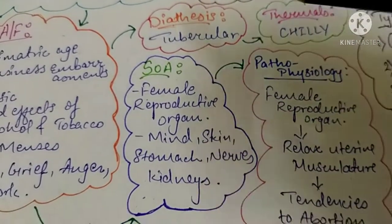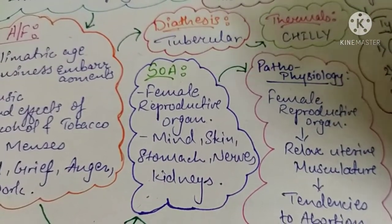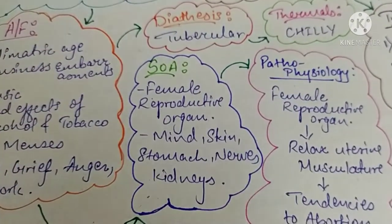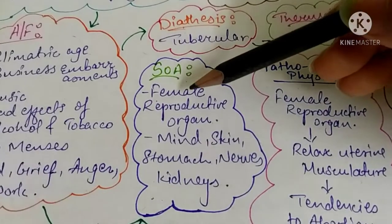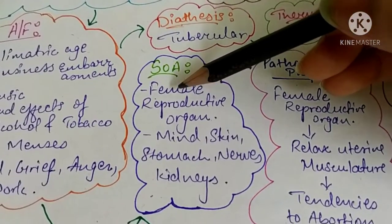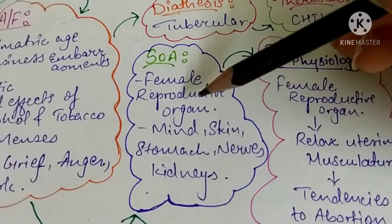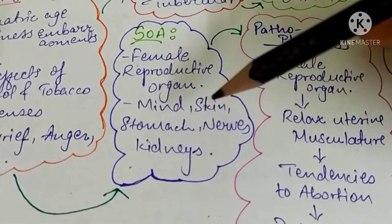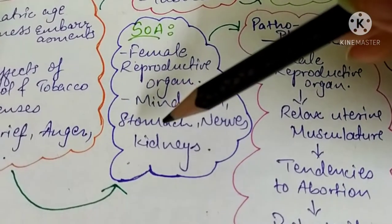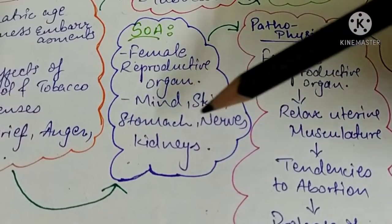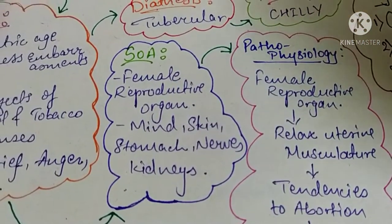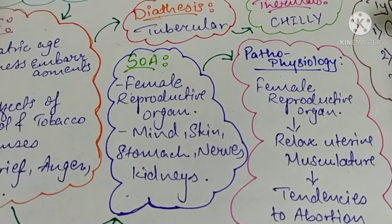The sphere of action of all fish group remedies is mostly on the female reproductive organ, then on the mind, skin, stomach, nerves, and kidneys — but mainly on the female reproductive organ.